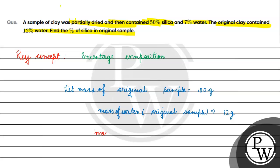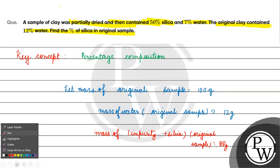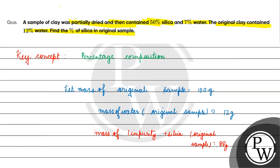Mass of impurity plus silica in the original sample equals 100 minus 12, which is 88 grams. So the mass of impurity and silica in the original sample is 88 grams.